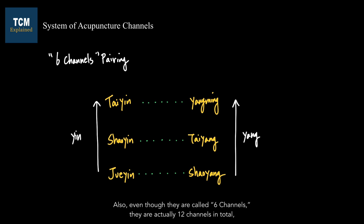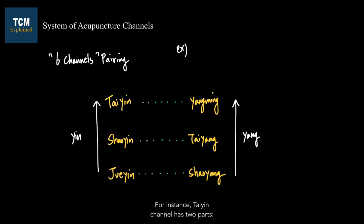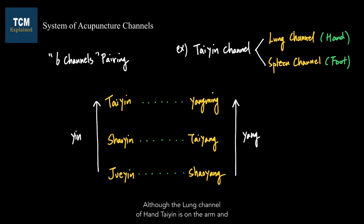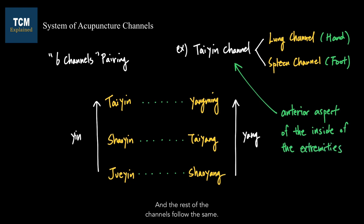Even though they are called six channels, they are actually 12 channels in total, because each of the six channels has a hand and a foot channel. Since the hand and foot channels are considered as one channel, we call them six channels. For instance, tai yin channel has two parts: the lung channel of hand tai yin and the spleen channel of foot tai yin. Although the lung channel of hand tai yin is on the arm and the spleen channel of foot tai yin is on the leg, they both traverse the interior aspect of the inside of the extremities.